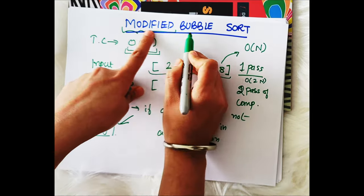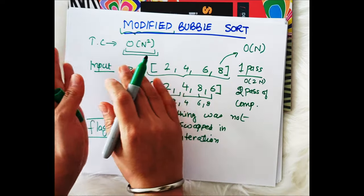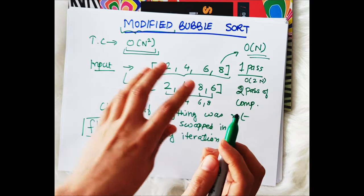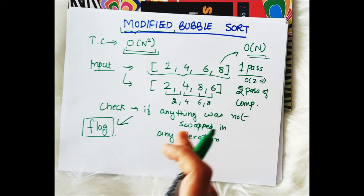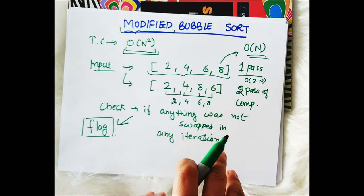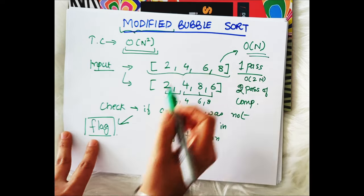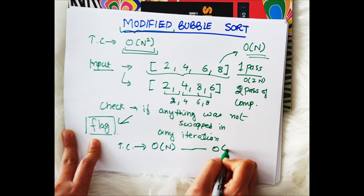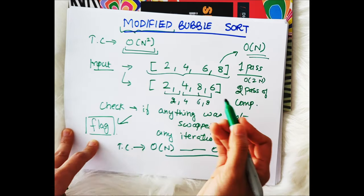So this means this algorithm doesn't guarantee that our time complexity will be O(n), but for cases when our array is not that complex or not that unordered in a complex way, then it will give us better time complexity. So that means this can have time complexity ranging from O(n) to O(n²). So that's why we call it modified bubble sort.